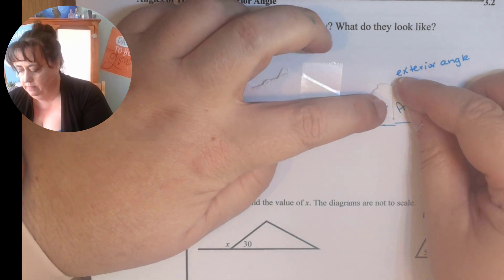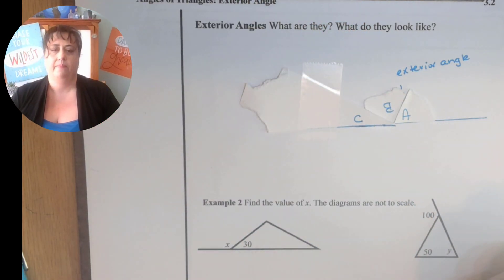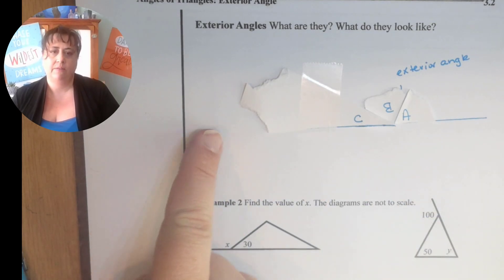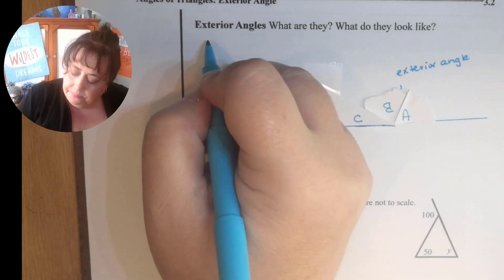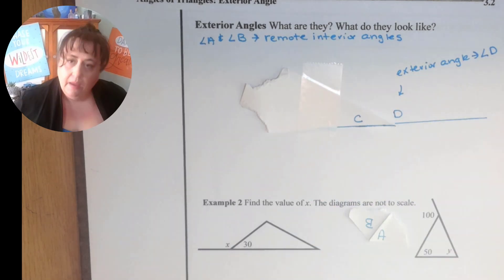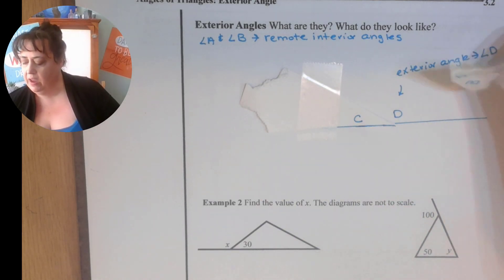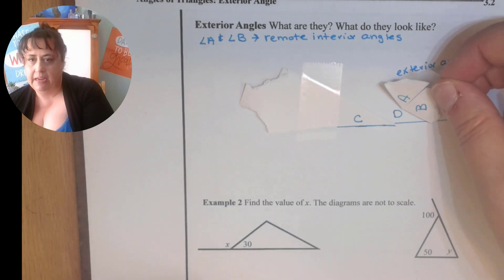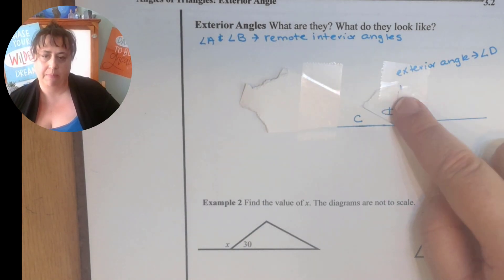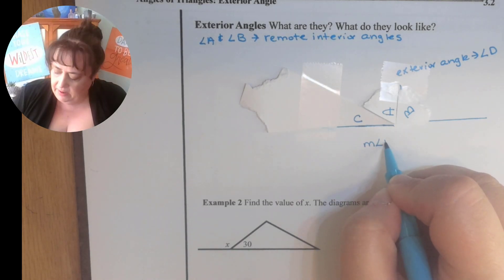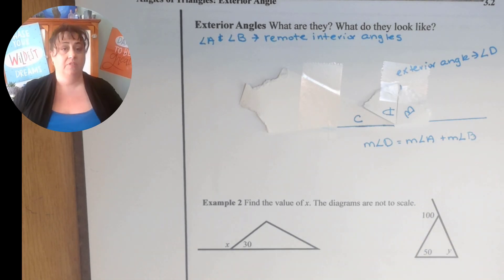Watch this — those torn corners are going to fit right here, just like that. So the exterior angle is equal to the other two interior angles. We're going to call A and B the remote interior angles. We're going to call this angle D the exterior angle. Angle D equals A plus B. We can say the measure of angle D is the same as adding the measure of angle A and the measure of angle B. So we can use that to our advantage.